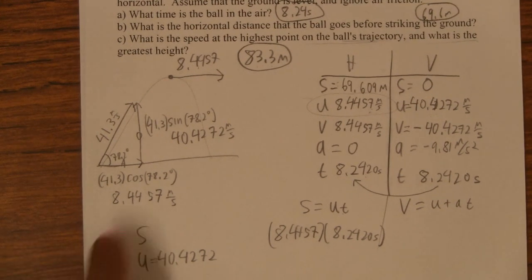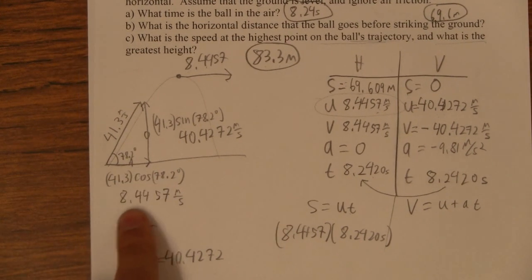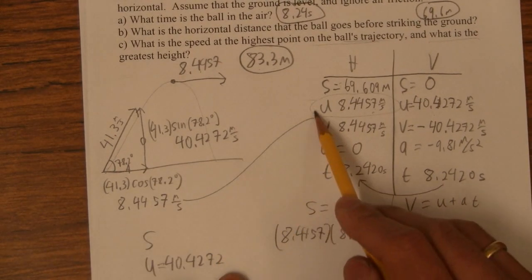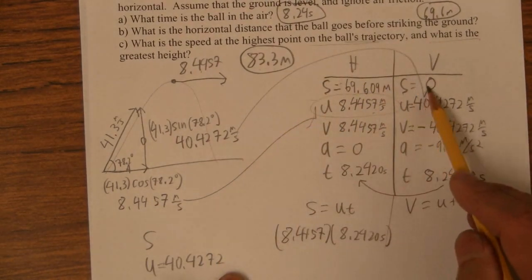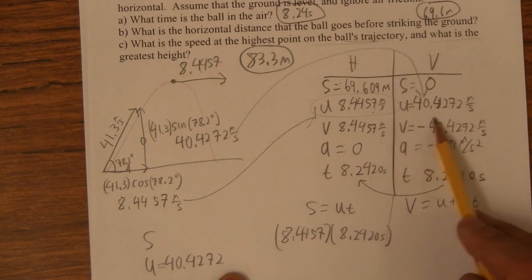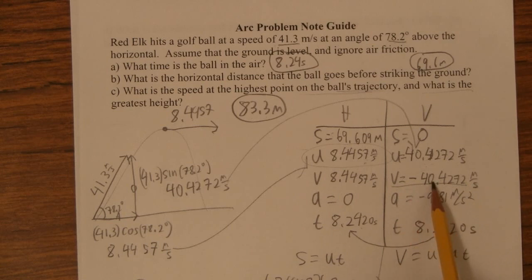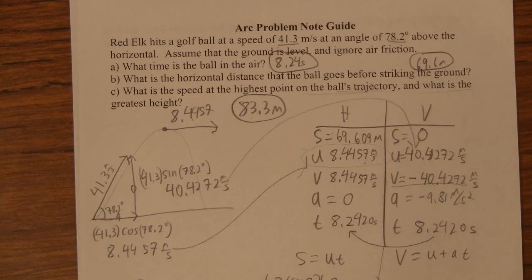So that's all there is to it. So when they give you an angle magnitude vector to begin with, break it into components. Those become your initial velocities. And then you've got to figure out what it is. If it's a level field like this, you're going to hit the ground with the same velocity that you started going up with. And then you can figure out the time, and the time goes across.